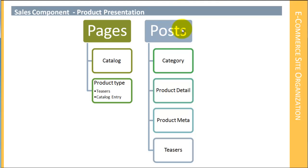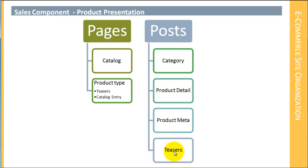And then we have the posts. The posts are really where all of the detailed information about the products are stored — in particular the product detail that you see, as well as product meta information. This information is then used to produce the teasers. The teasers are created from the product detail and the product meta information, and those teasers become the summary information of the products displayed on our product type pages.